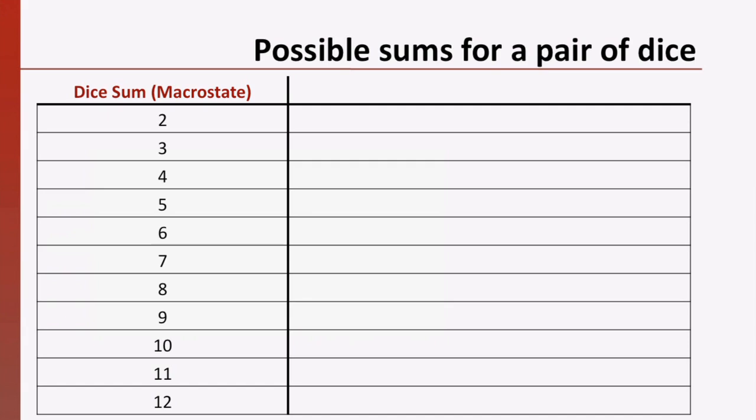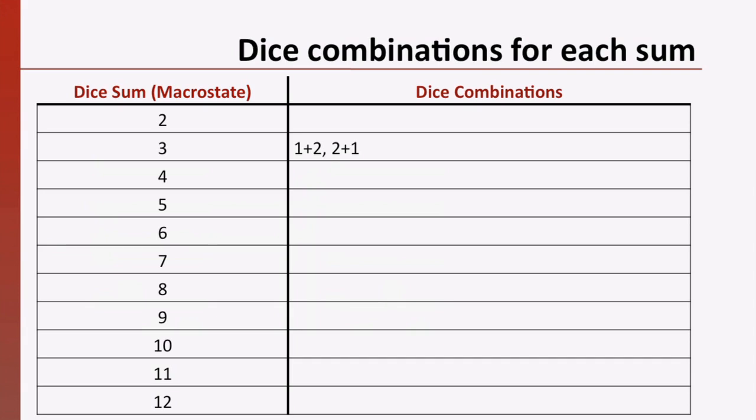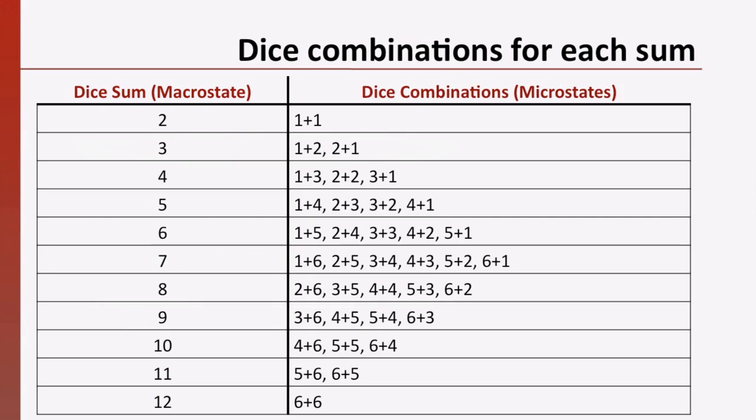What are all of the possible dice combinations that will produce each of those sums? For example, we can produce the sum of three by rolling a one on the first die and a two on the second die, or we can roll a two on the first die and a one on the second die. So there are two combinations that will produce the sum of three. The dice combinations that produce the remaining sums are shown here. We would call each of these combinations microstates that correspond to each macrostate. The microstate gives us information about the individual conditions of each die. We see that the most likely macrostate, a sum of seven, has the greatest number of possible microstates.